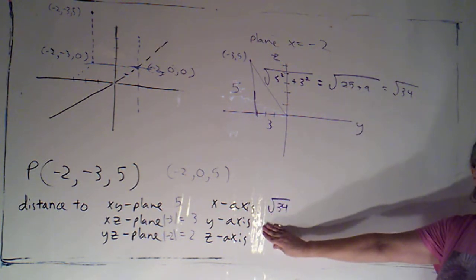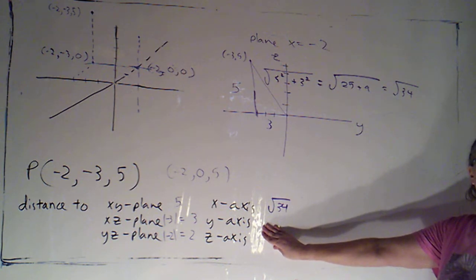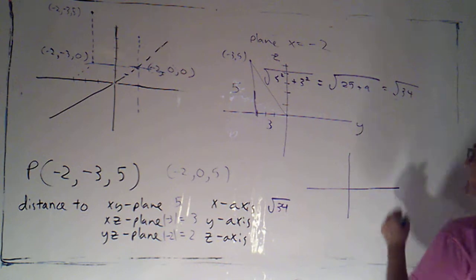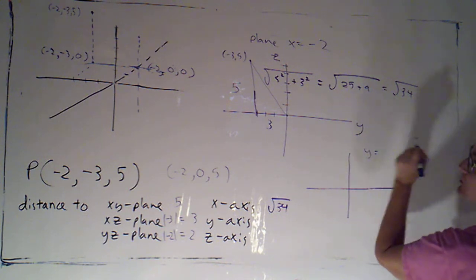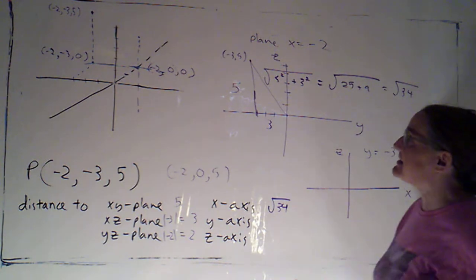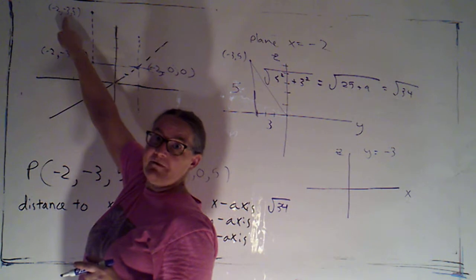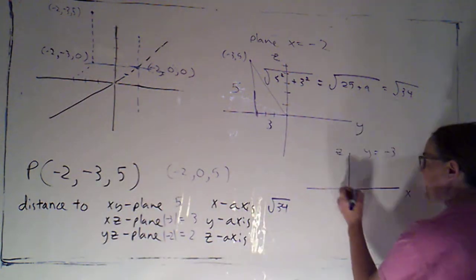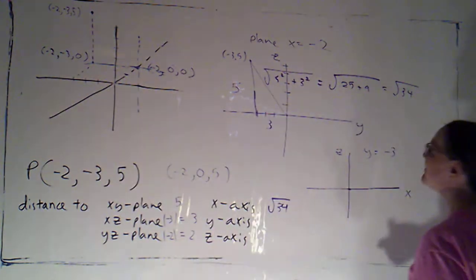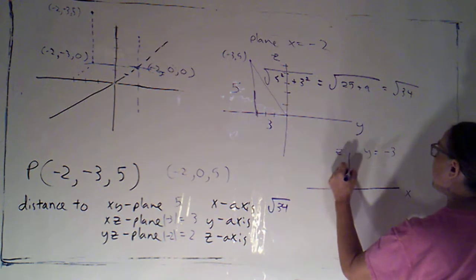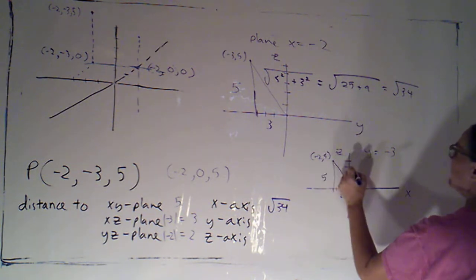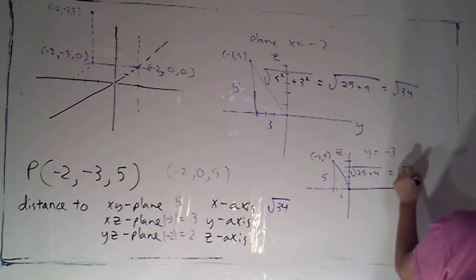Go ahead and pause the video, work out the remaining distances, then tune back in to check your work. Welcome back. To find the distance to the y-axis, I look in the plane y equals negative three, which is parallel to the xz plane. The point on the y-axis closest to P has that same y value of negative three but x and z equal zero — it looks like the origin within that plane. Then x is negative two and z is five. So by Pythagoras, that distance is the square root of 25 plus four, which is the square root of 29.